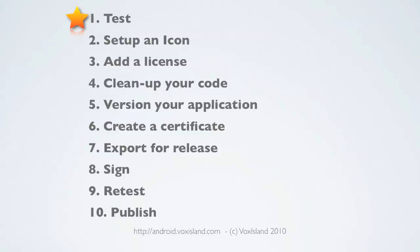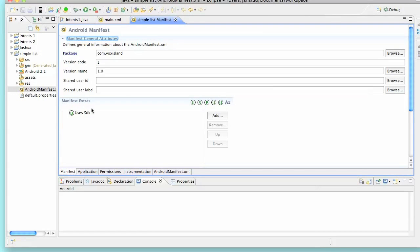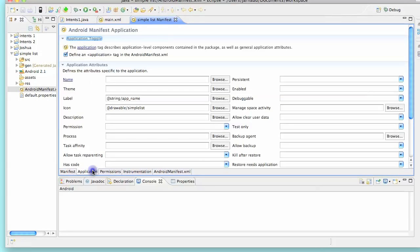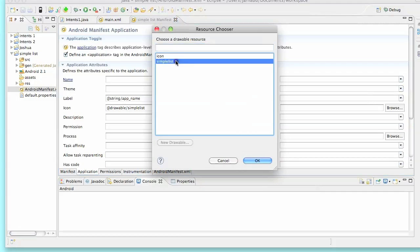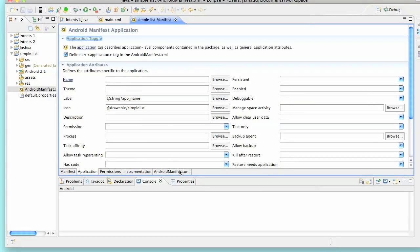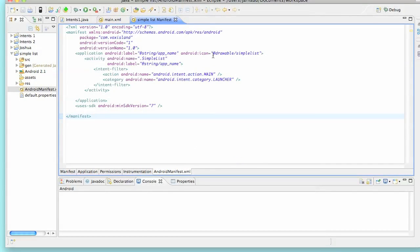Number two: setting up an icon. You're going to create and attach an icon to your application — it's going to be a PNG file, 64 by 64 pixels. You will upload it in the resource drawable directories of your application, then go into your AndroidManifest.xml file in the editor, under Application, browse and select your new icon, or edit the pointer to the icon directly in the XML.